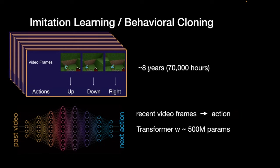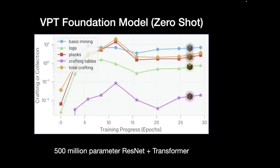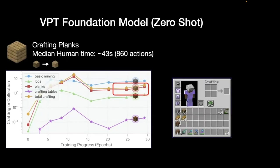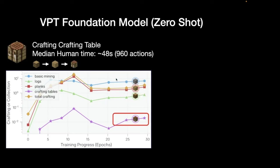We got eight years of Minecraft video — about 70,000 hours — labeled all of it with the IDM, then trained a second model: a transformer with about half a billion parameters to go from past observations to the next action a human would take. Zero shot, just from that pre-training, the model gets pretty good at basic things in Minecraft — it can mine with wood and simple resources, use the GUI to drag and drop icons, craft resources into tools, and even make a crafting table, which takes humans about a minute and about a thousand actions.